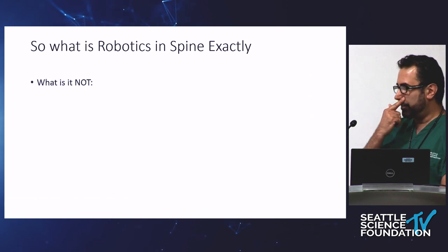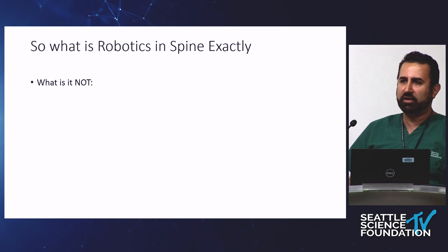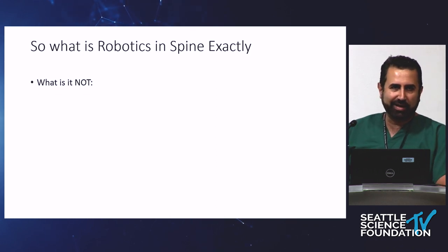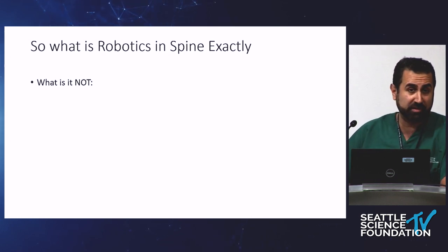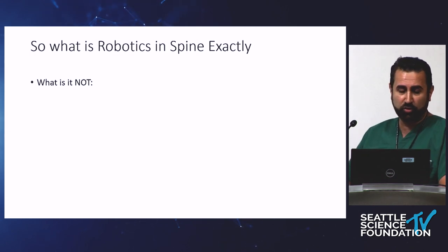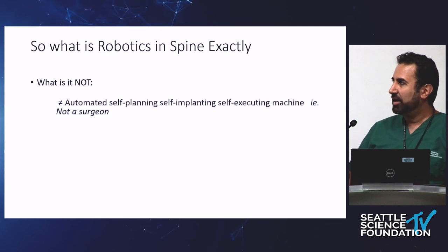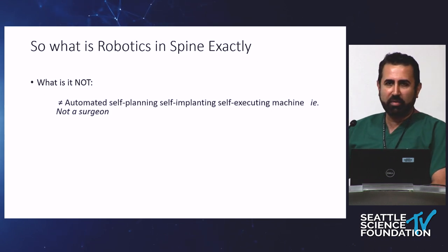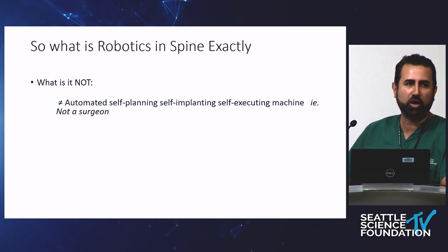To understand what robotics is, it's kind of like MIS surgery — there's never been a clean definition. So let's define what it isn't, and then we can identify what it is and use it effectively. It's not automatic, automated, self-planning, self-implanting, or self-executing. In other words, it is not a surgeon. That is you.